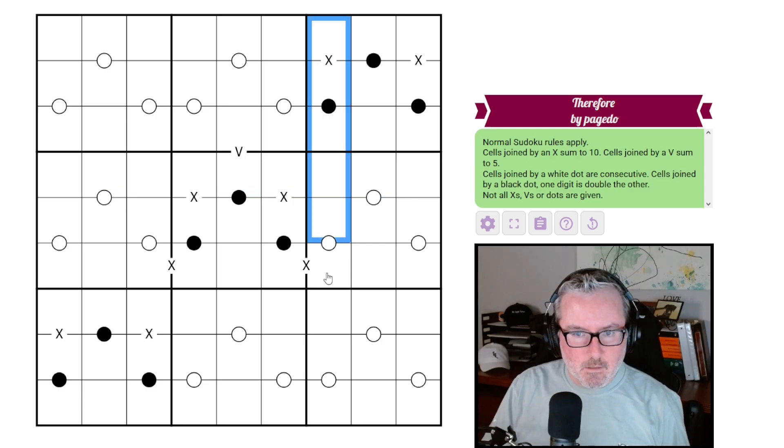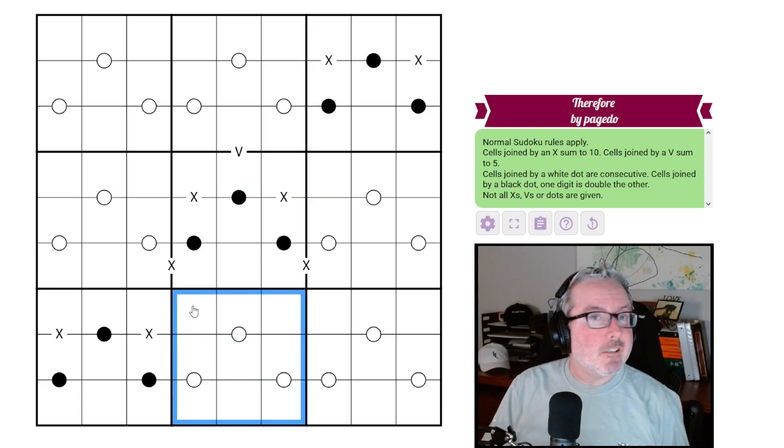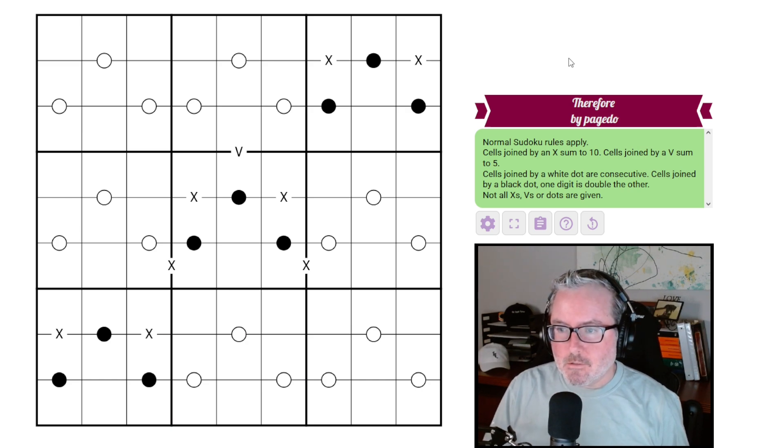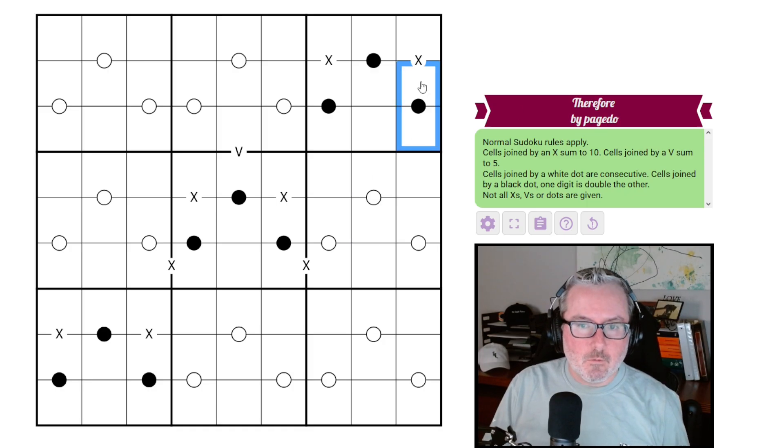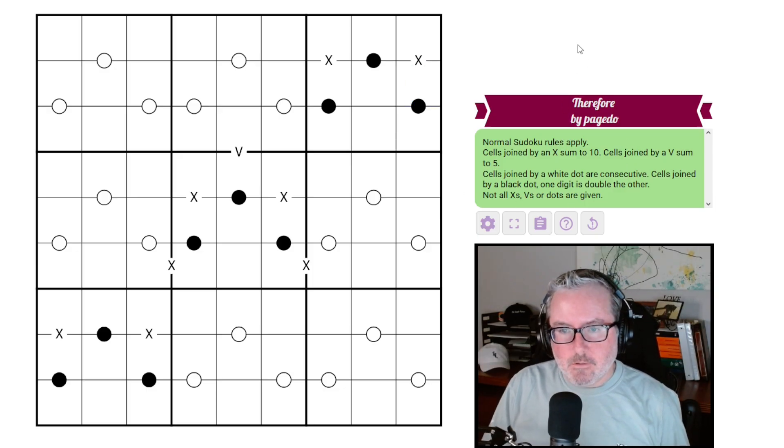Therefore by PageDue. Normal Sudoku, so every row, column, and three by three box will contain the digits one through nine once each. Cells joined by an X sum to 10, cells joined by a V sum to five. Cells joined by a white dot are consecutive, cells joined by a black dot, one digit is double the other. Normal kropki. And not all X's, V's, or dots are given, so there's no negative constraint.